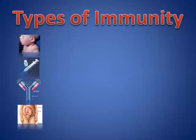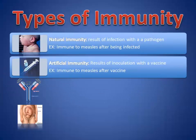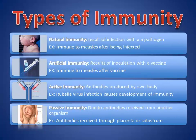This is a quick explanation of the different types of immunity. You can separate immunity into two categories: natural and artificial. We can also classify it as active and passive, so there are two different types of classifications.